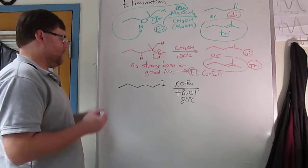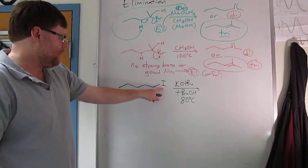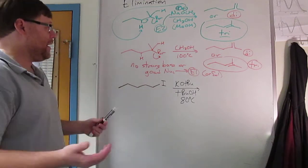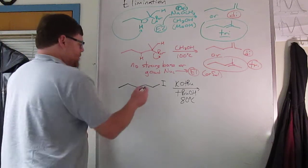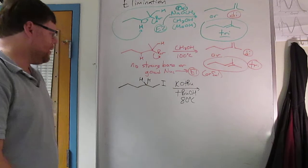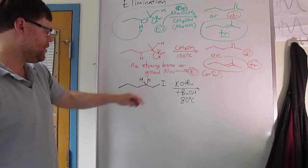So again, compound with the leaving group, the iodide is the leaving group, that carbon is going to be the electrophilic carbon. I've said it has to be an elimination reaction, so you only have two beta hydrogens on that CH2, right?